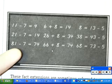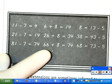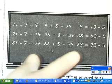81 minus 7 equals 74, 66 minus 8 equals 74, 68 equals 73 minus 5.